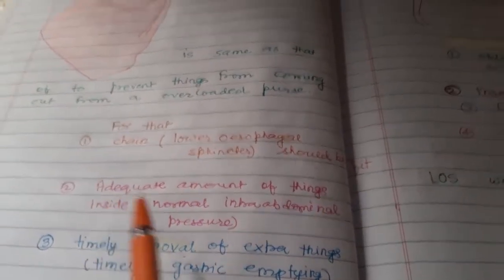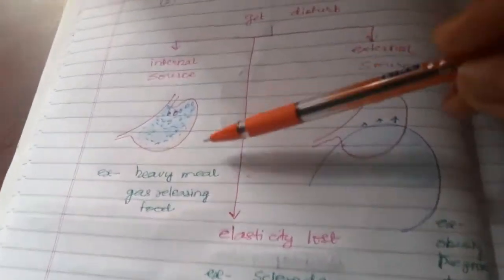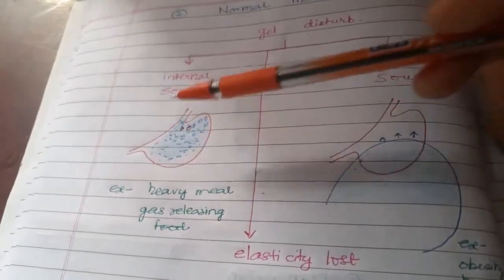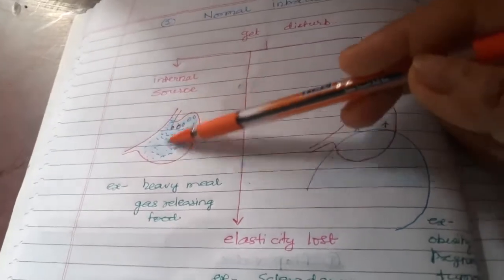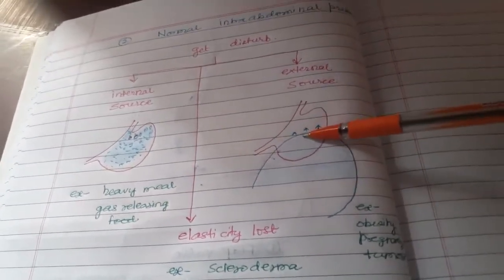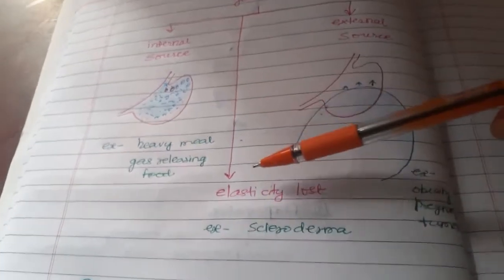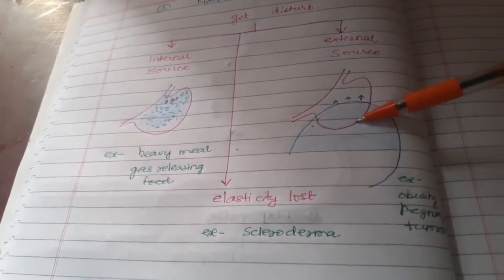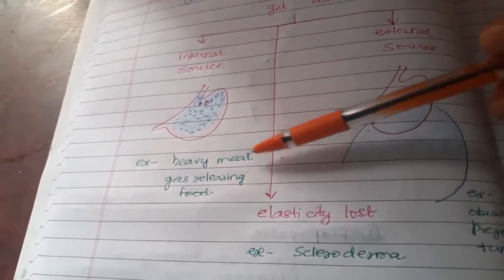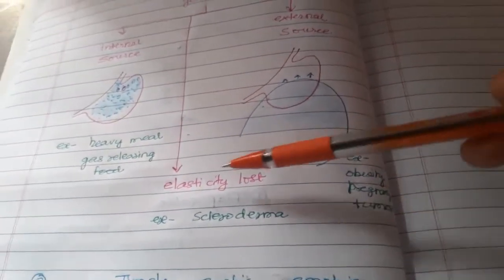The second factor is adequate amount of things inside — that is, normal intra-abdominal pressure. This gets disturbed if the stomach is overfilled from internal sources, increasing internal pressure, or from external sources where the stomach gets pressed and things ooze out. Internal sources include heavy meals and gas-releasing foods. External sources include obesity, pregnancy, and tumors. Additionally, if the elasticity of the stomach is lost, this also contributes.